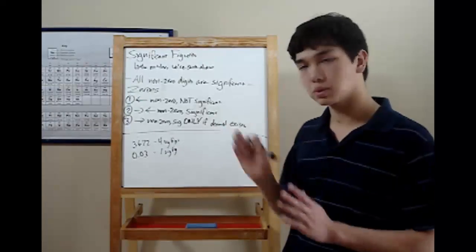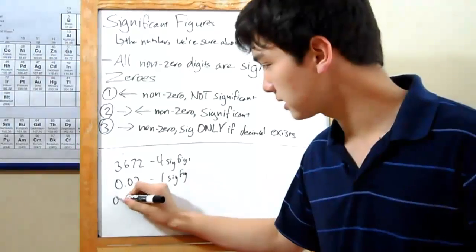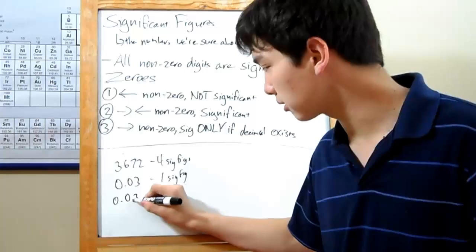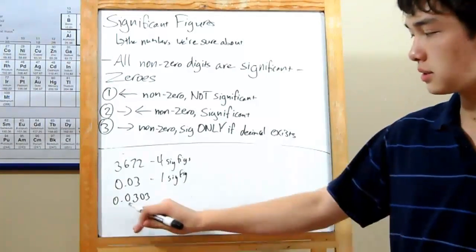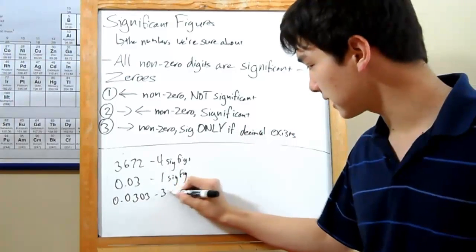Next, zeros between non-zero digits are significant. So let's tag on a few extra numbers, 0.0303. The threes are both significant, and so is the zero in between them by that rule. So, three sig figs.